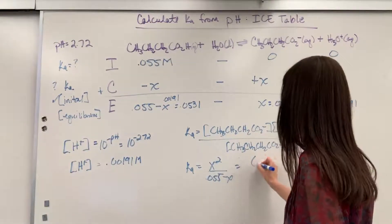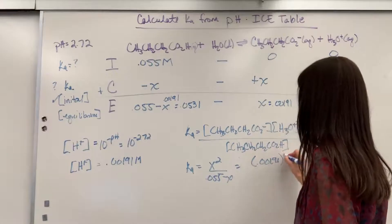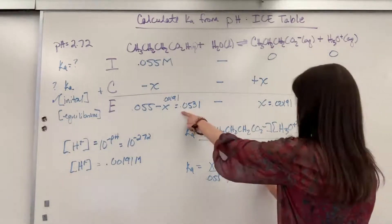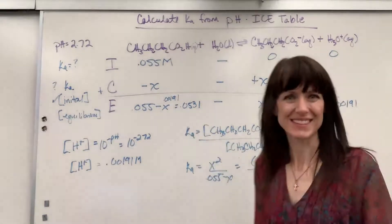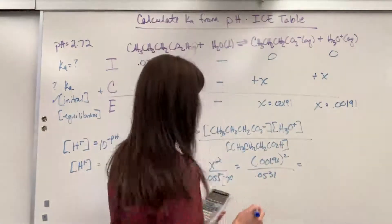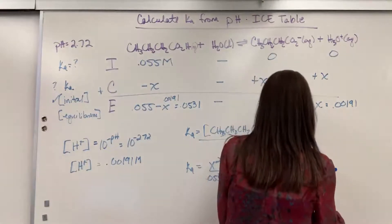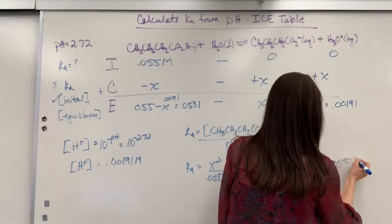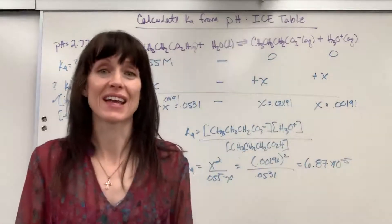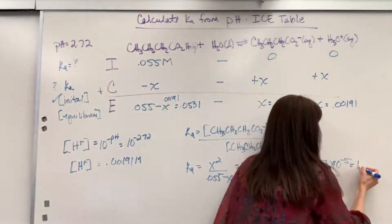So we're going to have 0.00191. That's squared divided by I already subtracted that 0.0531 equals. Let's put that into our calculator. And we are going to get 6.87 times 10 to the minus 5. And that is our Ka.